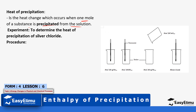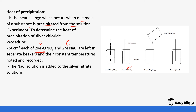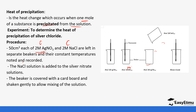When you look at the reaction, we are going to react silver nitrate with sodium chloride. So 50 cm³ of silver nitrate, two molar, and 50 cm³ of sodium chloride, two molar, are left in separate beakers and their constant temperatures noted and recorded. Then the sodium chloride solution is added to the silver nitrate as you can see in this setup. The beaker is covered with a cardboard box and shaken gently to allow mixing of the solutions.